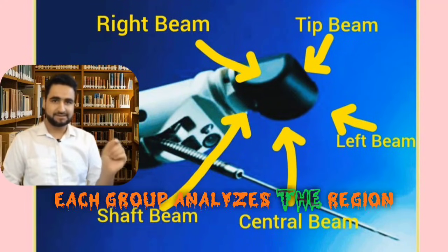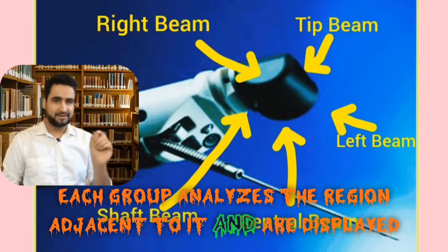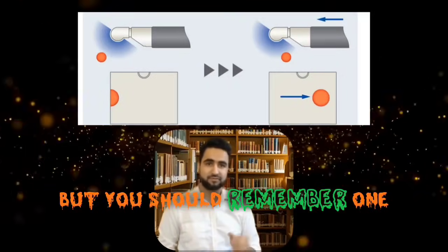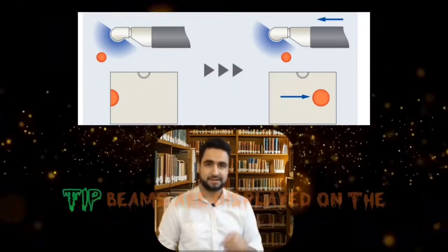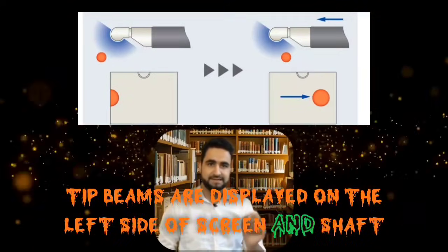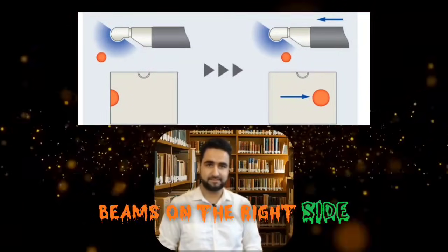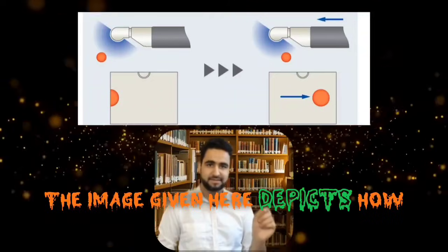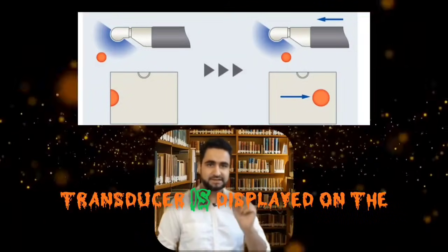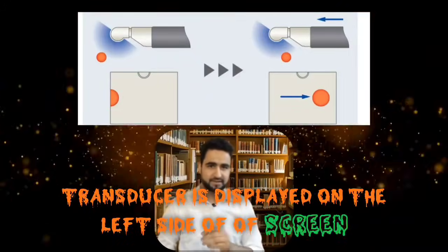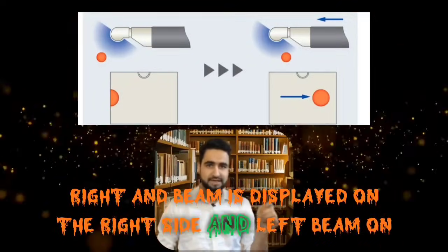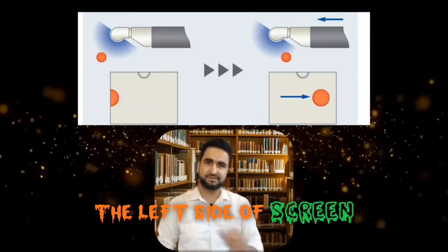Each beam group analyzes the region adjacent to it and the results are displayed accordingly on the screen. One important thing to remember: tip beams are displayed on the left side of the screen and shaft beams on the right side. A structure near the tip of the transducer is displayed on the left side of the screen; the right end beam is displayed on the right side and the left beam on the left side.